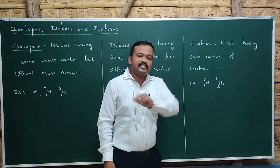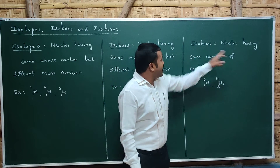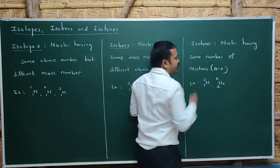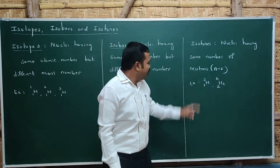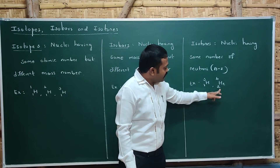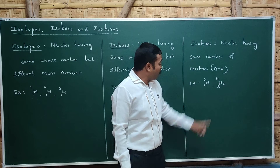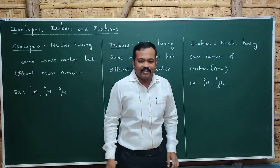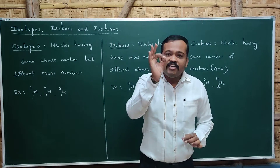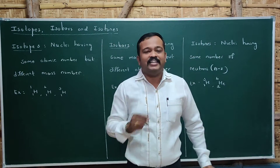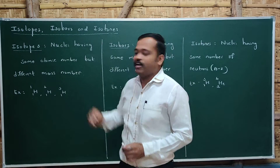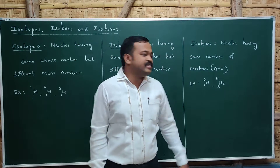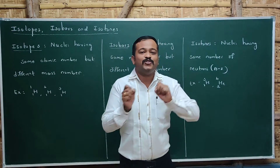Next are isotones. These are nuclei having the same number of neutrons — that is, A minus Z is the same. For example, H-3 and He-4: for H-3, neutrons = 3 minus 1 = 2; for He-4, neutrons = 4 minus 2 = 2. Both have the same number of neutrons. To summarize: if Z (atomic number) is same, they are isotopes; if A (mass number) is same, they are isobars; if A minus Z (neutron number) is same, they are isotones.